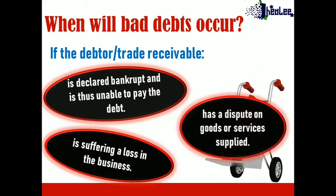Another cause is where the debtor or trade receivable has a dispute on goods or services supplied. For example, someone may have purchased a dress on credit, and upon receiving it, they found the thread started pulling and the dress started falling apart. They take it back to the store, but the store owner decides not to replace it or give a credit note for that dress.